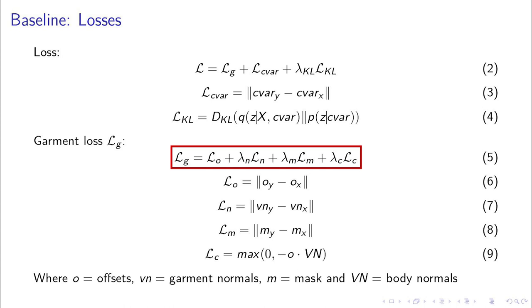The garment loss can be further decomposed into offset, normal and mask loss as L1 norm and collision loss. Given that garments are encoded as body offsets, the collision loss can be simplified to check whether offsets go within the body or not.